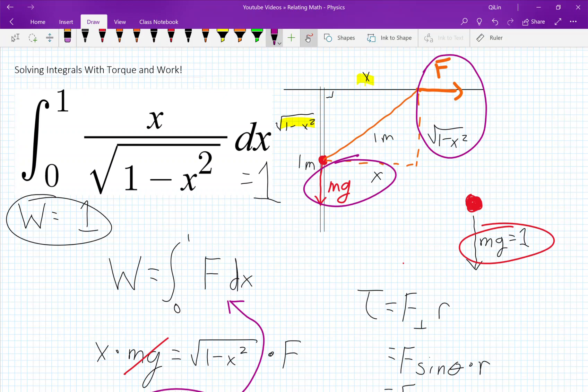And you can technically solve this with the standard way by using a u substitution where u is equal to 1 minus x squared. And that is also another fabulous method. But unfortunately, my margins are too small to contain that. And I will leave it as an exercise for the viewers. Thank you, and have a nice day.